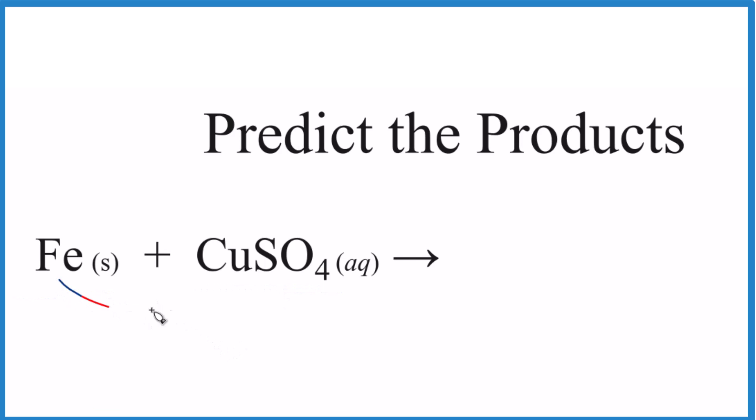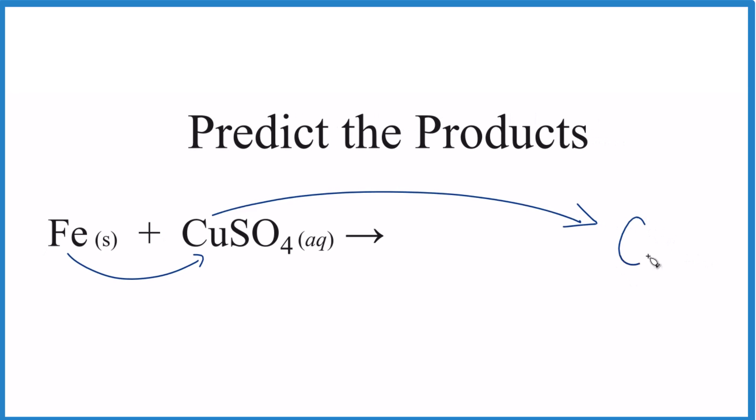So it looks like the iron would push the copper out. We'd end up with copper and that would be a solid now, and then the iron would be with the SO4. So that's our single replacement or displacement reaction. Iron replaces the copper. The iron now with the sulfate.